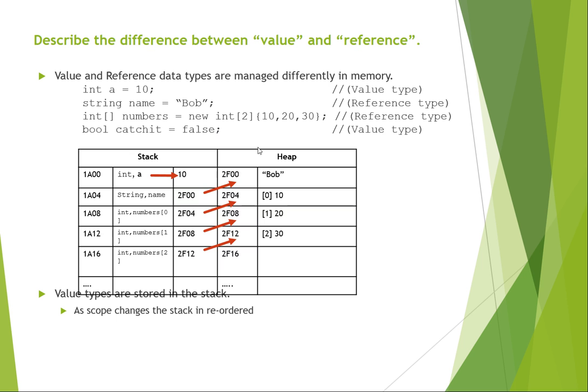But when we're passing by reference, we're actually passing the reference of where the information can be found out on the heap. Very different way that it's handled. So reference types are stored out on the heap compared to value types that are stored in the stack.